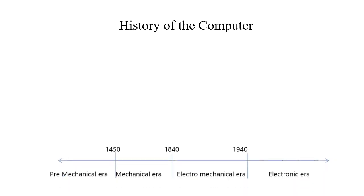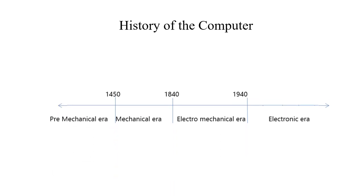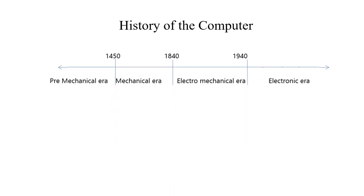Computer history can be divided into four eras. Among them, two eras are especially significant, such as the mechanical era and the electronic era.